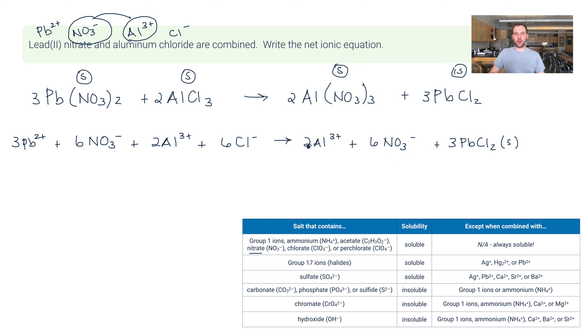Now to get the net ionic equation I just want to cross off anything that is a spectator ion. And so that leaves me with this. Three Pb2 plus AQ plus six Cl minus AQ makes three PbCl2 solid. Now there is one more thing. I know this video is getting pretty long. There is one more thing. Look at the coefficients here. Three, six, and three. They can all be divided by three. That gives you one Pb2 plus AQ plus two Cl minus making PbCl2 solid. That's the actual net ionic equation.